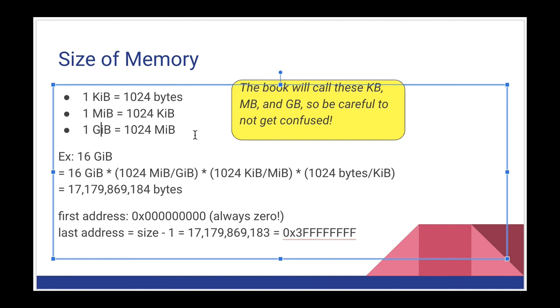The math is pretty easy on these. If you take, for example, 16 gibibytes, multiply that by 1024 to get your mibibytes or megabytes. Multiply that by 1024 to get your kilobytes. Multiply that by 1024 to get your bytes. You can also figure out your first and last addresses in that size of memory. First address, no matter what, is always zero. The last address possible in this memory is always its size minus one. And you can convert that back to hex if you like.